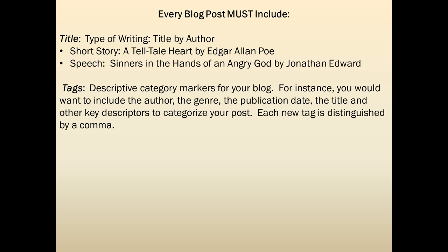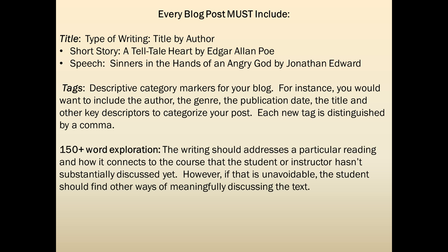Tags are descriptive category markers for your blog. For instance, using the Edgar Allan Poe post, you would want to include in your tags the author, the genre, the publication date if known, the title, and other key descriptors to categorize the post. Each tag is distinguished by a comma. This is a key piece for the blog so that posts can be properly organized.